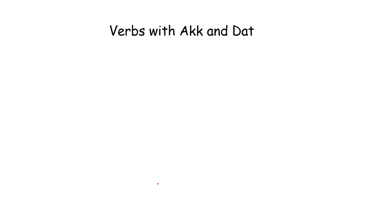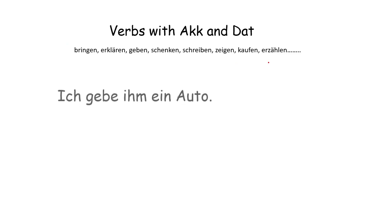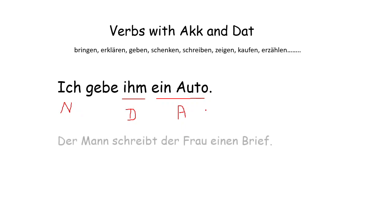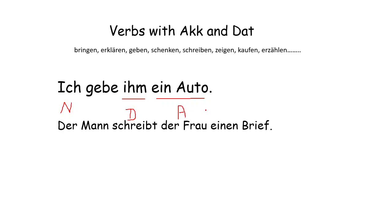Verb with accusative and dative — there are certain verbs like this. 'Ich gebe ihm ein Auto' — 'ich' is nominative, 'ihm' is the person in dative, and 'ein Auto' is accusative. We normally make sentences like this. 'Der Mann schreibt der Frau einen Brief' — 'schreiben' is an accusative-and-dative verb; 'der Frau' changes to dative and 'einen Brief' is accusative.